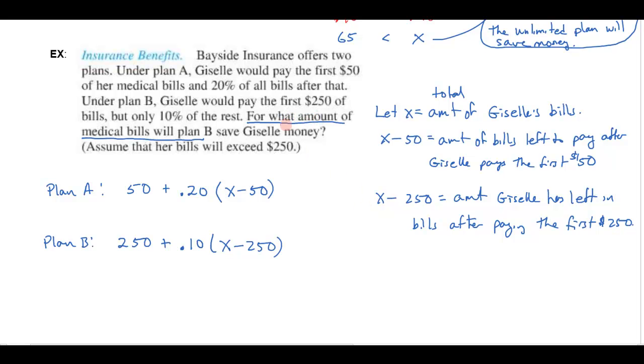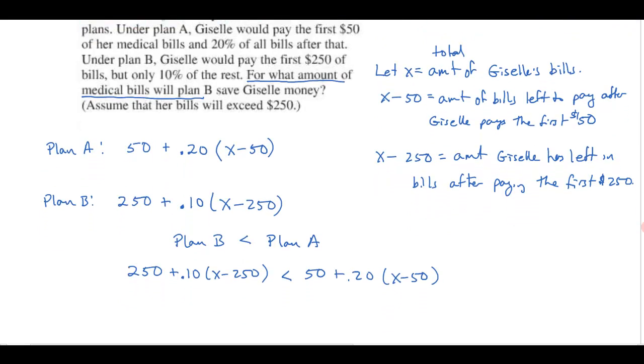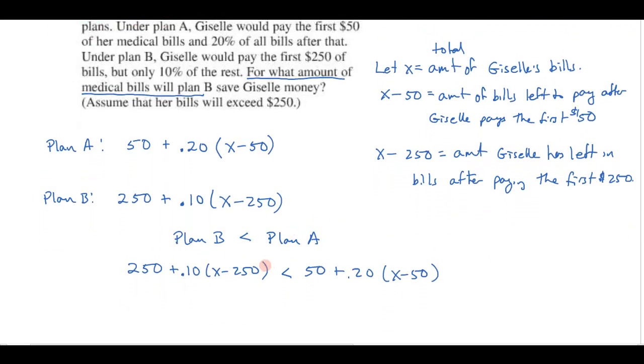Then let's go here. It says for what amount of medical bills will plan B save Giselle money? So what we want is we want plan B, if it's going to save her money, that's got to be less than plan A. So I want to know where is the $250 plus the 10% of x minus 250, where is that going to be smaller than the cost of plan A, which is the $50 plus 20% of x minus 50. The wonderful thing about algebra is once I get to right here, now I can just sort of crank the handle and here comes the answer. I can forget about Giselle's medical plans and all this. It's just dealing with the algebraic inequality I have here.